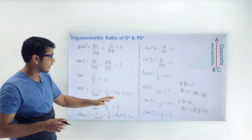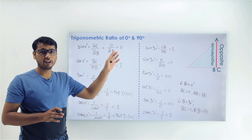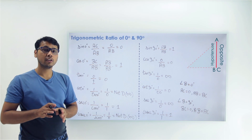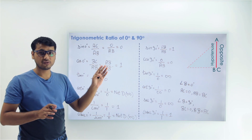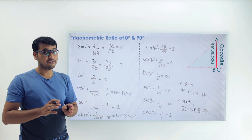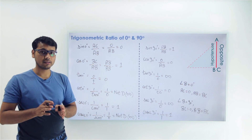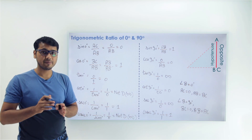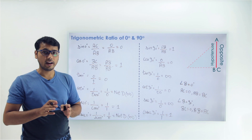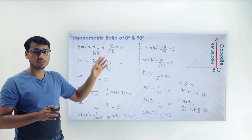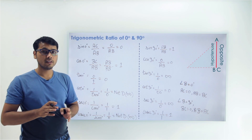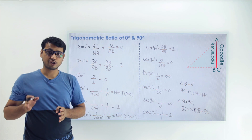This is how we calculate all the values for 0 degrees and 90 degrees. Most importantly, we should remember the table we learned in our first video on this topic. If we have a good memory of that table, we can easily solve all examples and questions related to trigonometry, and apply trigonometric ratios confidently in future topics.